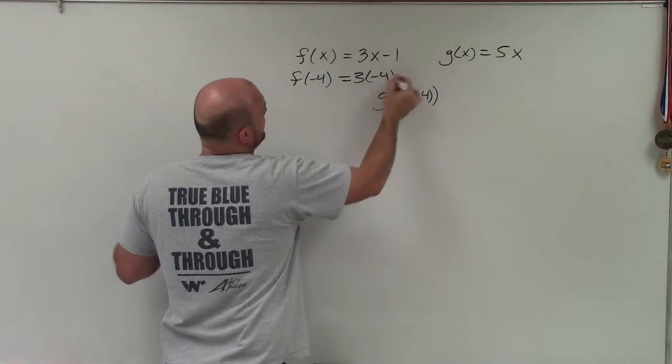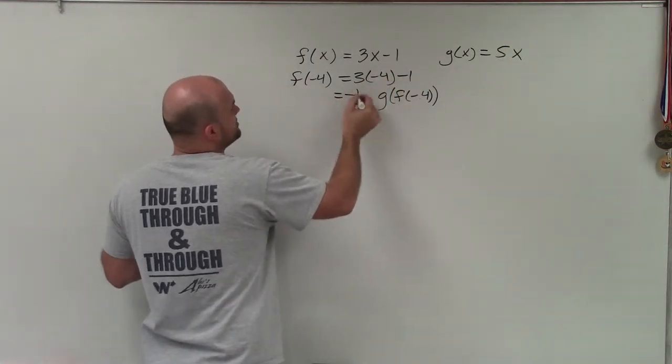So that's 3 times negative 4 minus 1, which equals negative 12 minus 1, which is negative 13.